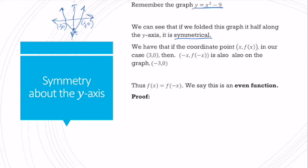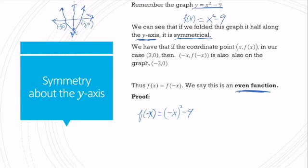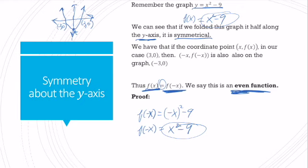A function that is symmetric about the y-axis is called an even function. Even functions satisfy f of x equals f of negative x. Let's prove this for f of x equals x squared minus 9. Substituting negative x into the function gives f of negative x equals negative x squared minus 9, which equals x squared minus 9. This is the same as f of x, so because f of x equals f of negative x, this is an even function.